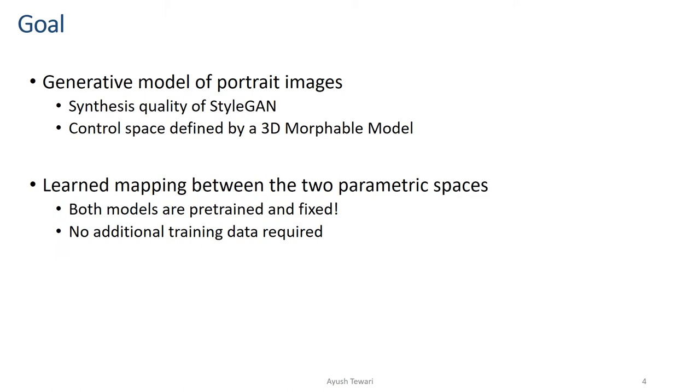In this paper, our goal is to build a generative model of portrait images where we preserve the synthesis quality of StyleGAN but allow for 3D controllability using a 3D Morphable model. We do this by learning a mapping between the parametric spaces of these two models. Both models are pre-trained and fixed, so our method does not require expensive retraining. We do not require any additional training data, relying only on random samples from StyleGAN for our training.